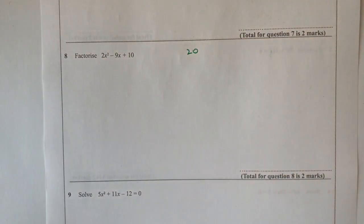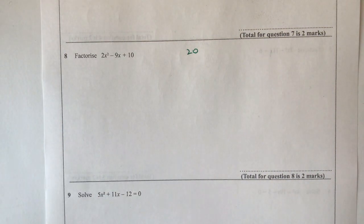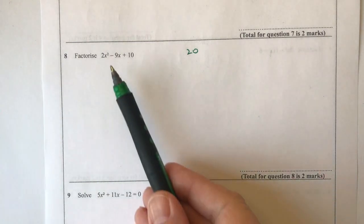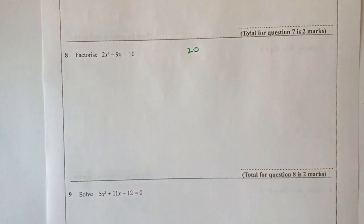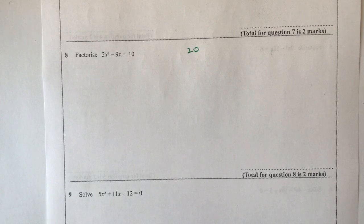And then what I'm looking for is two factors of 20 that when I multiply them together make 20, and when I add them together make minus 9. Now there's lots of factors of 20, so it could be 20 and 1, but that wouldn't work because that's going to make me 21.